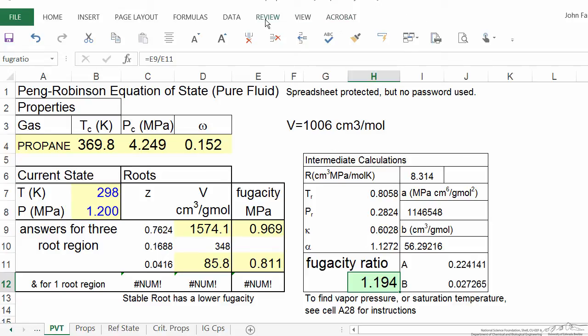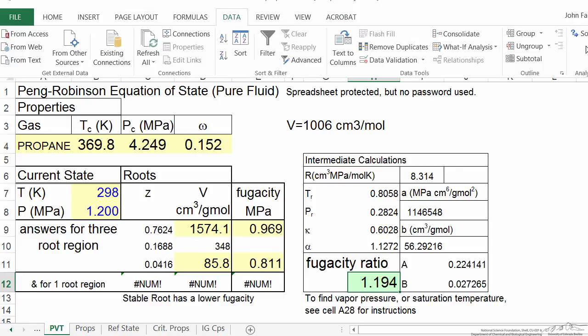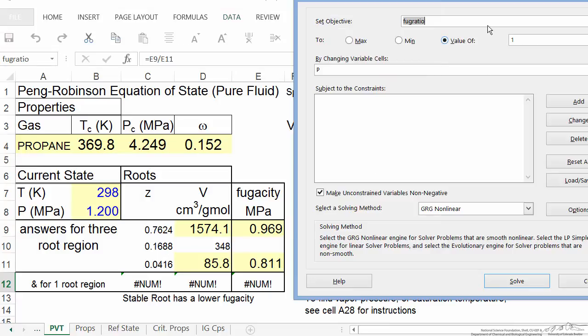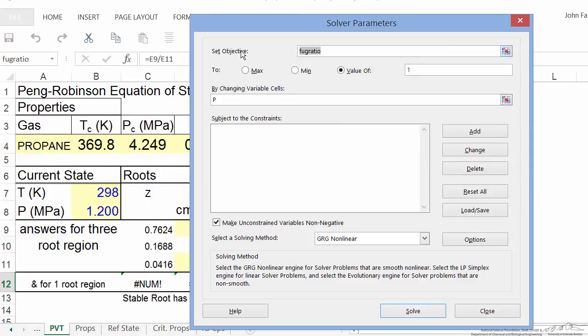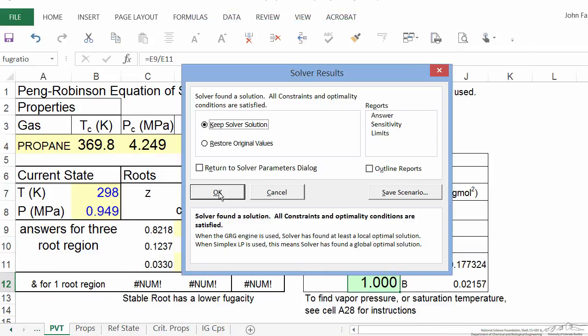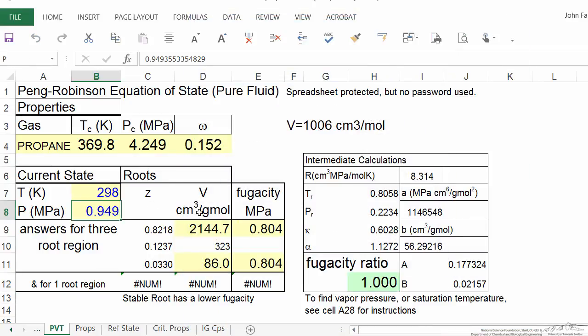I'm going to go into Data, into Solver, and change this fugacity ratio. That's my objective function—I want the fugacity ratio to equal 1. I'm going to change the cell for pressure, namely B8. If I tell it to solve, it comes up with a solution: the pressure is essentially 0.95 megapascals.